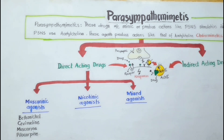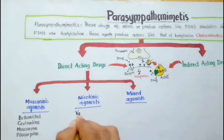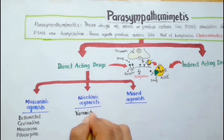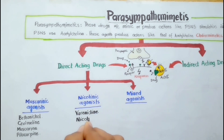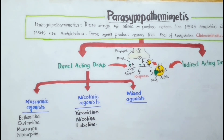Then we have the nicotinic agonists, which include agents that only bind to nicotinic receptors and show their actions. These include varenicline, nicotine, and lobeline. Among these, varenicline is a choline ester while nicotine and lobeline are alkaloids.